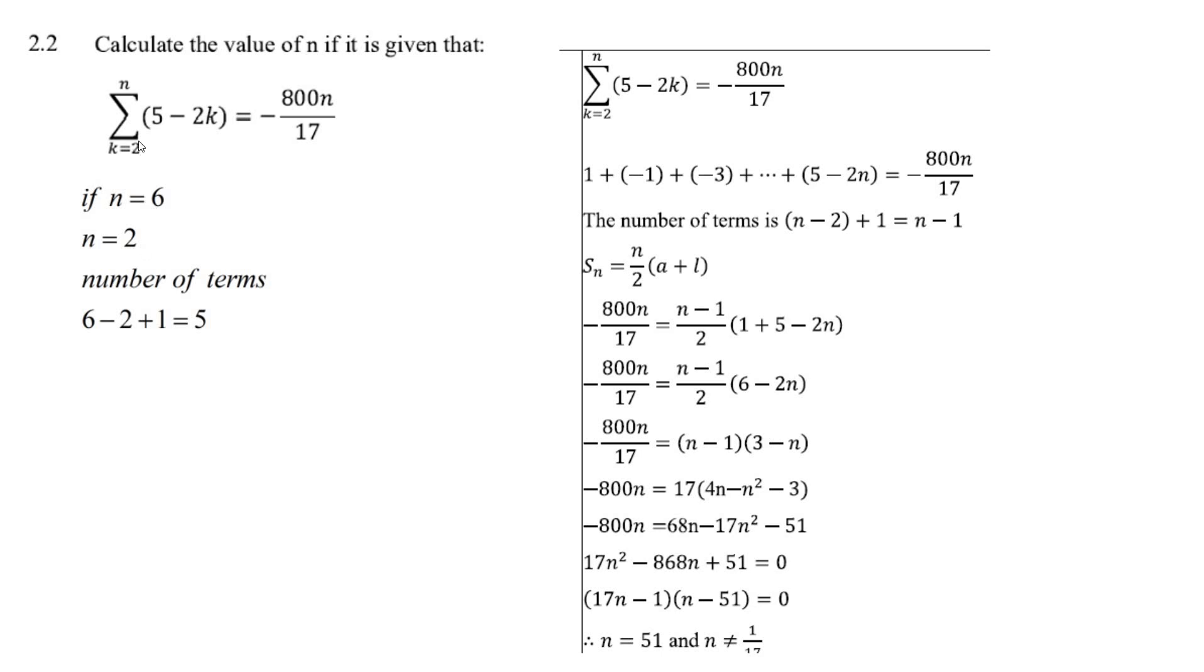That's 5 terms. But here, you've got n terms, but you have to do the same thing. The number of terms here is n minus 2 plus 1. So the number of terms in this sequence is n minus 1.